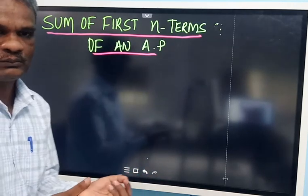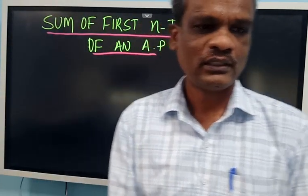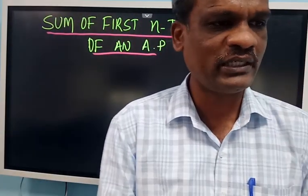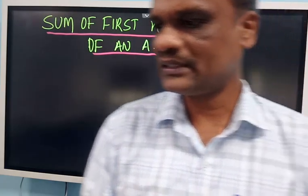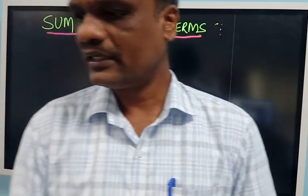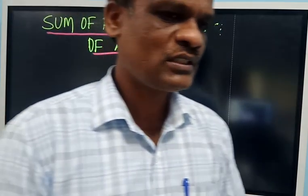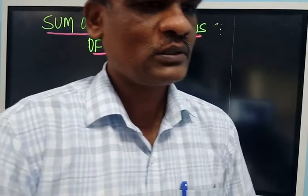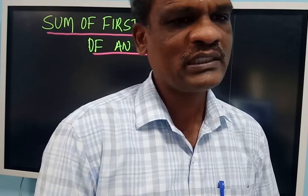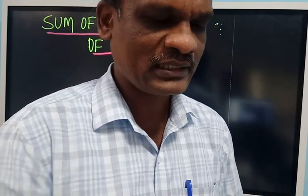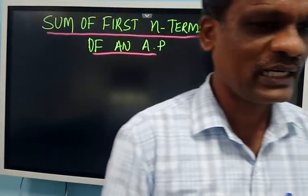Before we go to that formula, there is an interesting story related to this sum of N terms. You might have heard of the famous mathematician Gauss. He was very intelligent in school. When he was at the age of 10 years, he was very mischievous in class.